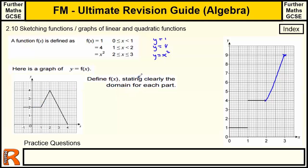This one, we've got to define f(x), stating clearly the domain for each part. This is broken up into three parts. We've got this bit. The first bit is a straight line. Then we've got a straight line going up, and then a straight line coming down. So f(x) equals, well, y equals 2.